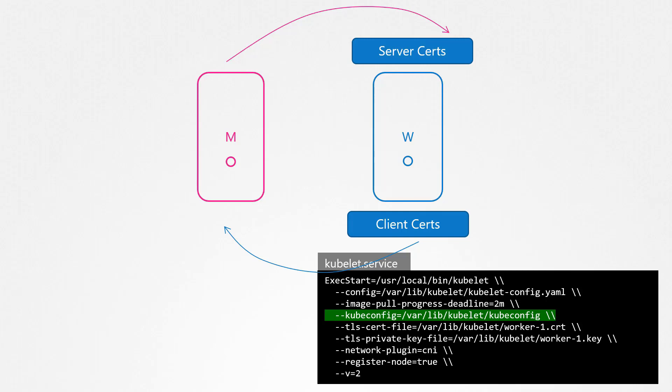All certificate-related operations are carried out using the certificates API, which we have discussed earlier in this course. For using the certificates API, the Kubelet needs to be able to authenticate into the kube API server with the right set of permissions. So the first set of tasks is to create the necessary set of permissions on the master node to allow the worker nodes to make these requests.